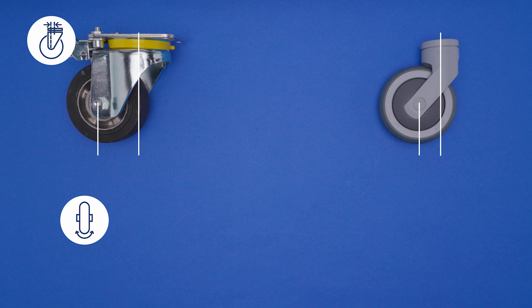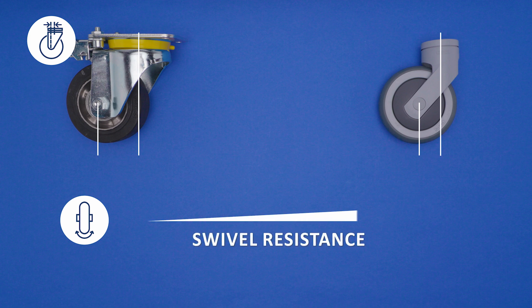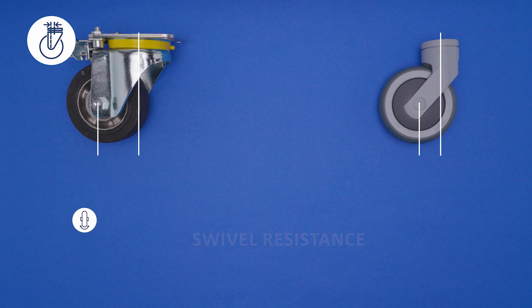If we look at the swivel resistance, we can say that casters with a larger offset feature low swivel resistance, and casters with a small offset have a higher swivel resistance.